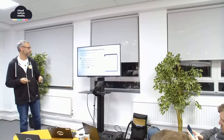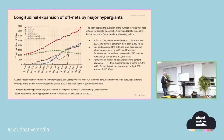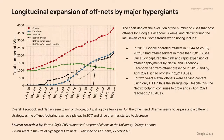The study ran from 2013 to 2021. This chart depicts the longitudinal expansion of off-net caches by major hypergiants. In 2013, Google operated off-net in 1,044 AS's — that's typically one ISP with an autonomous system number. By 2021, Google had off-net servers in 3,810 AS's. The study also captured the birth and rapid expansion of off-net deployments by Netflix and Facebook.